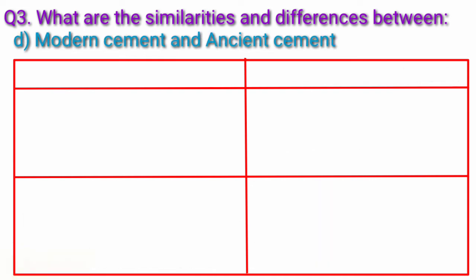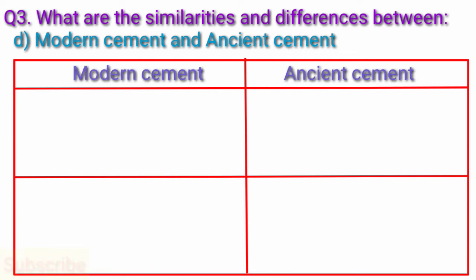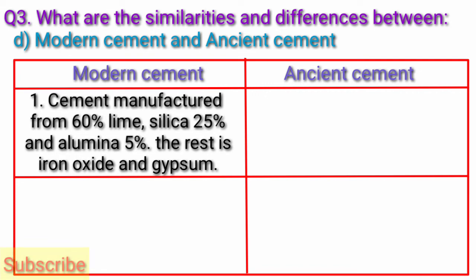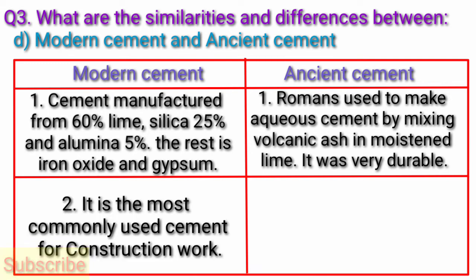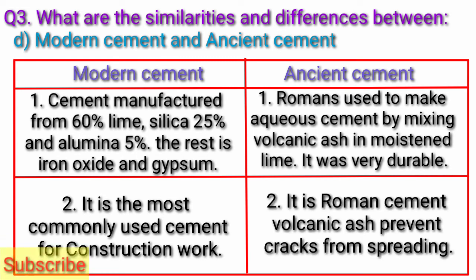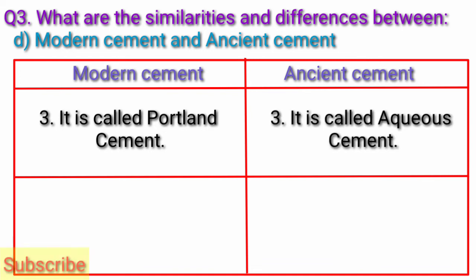Modern Cement vs Ancient Cement: Modern cement is manufactured from approximately 60% lime, 25% silica, and 5% alumina; the rest is iron oxide and gypsum. It is the most commonly used cement for construction work and is called Portland Cement. Ancient cement: Romans used to make aqueous cement by mixing volcanic ash in moistened lime — it was very durable. Roman cement contained volcanic ash which prevented cracks from spreading, and was called Aqueous Cement.